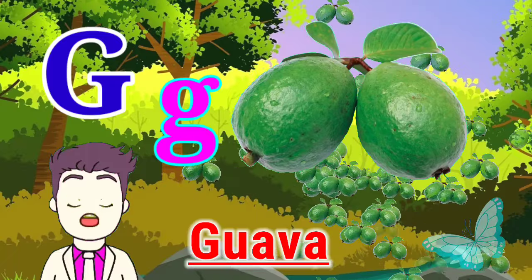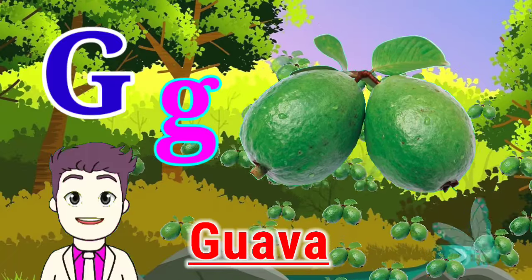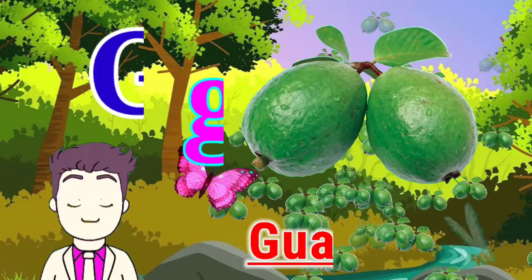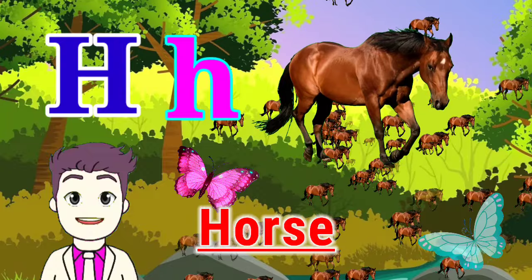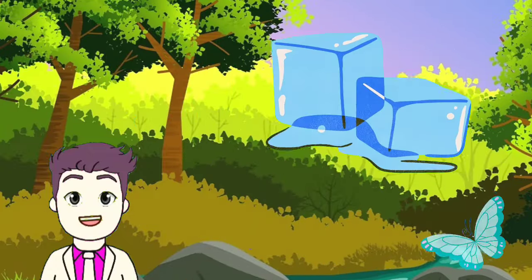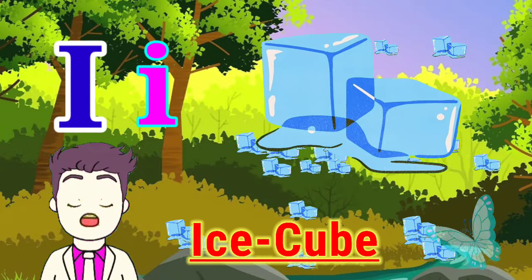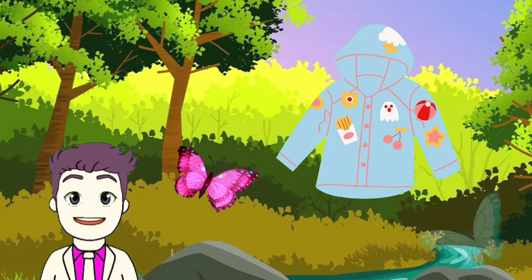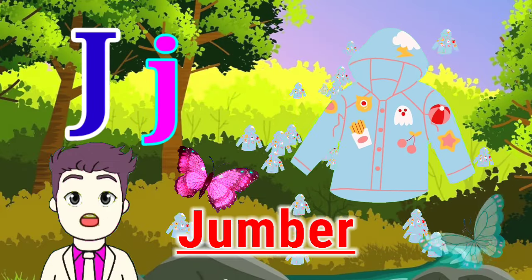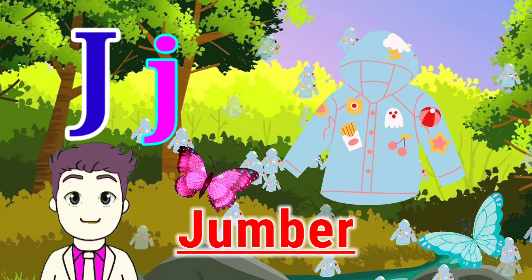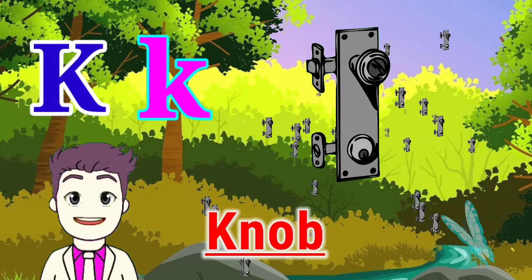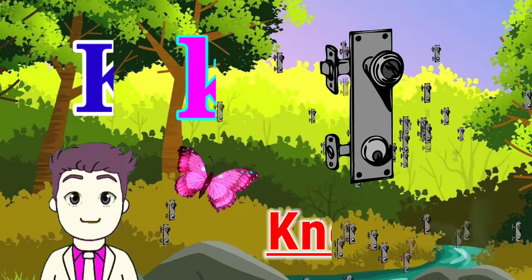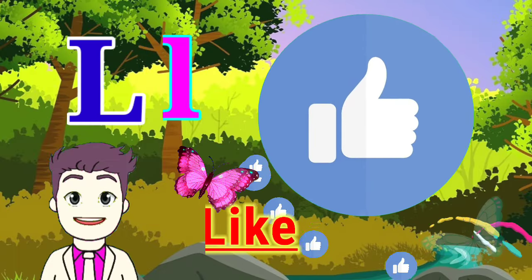G for guava. H for horse. I for ice cube. J for jam jar. K for knob. L for light.